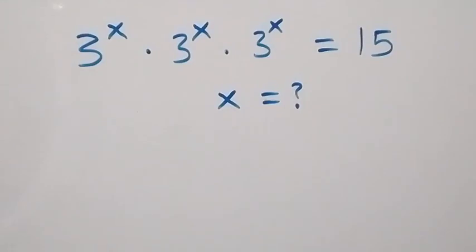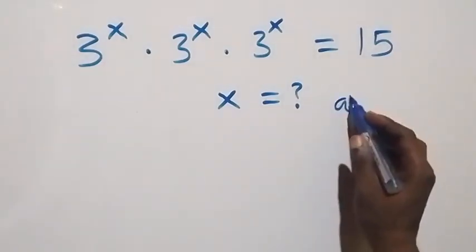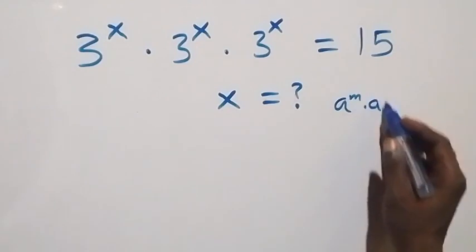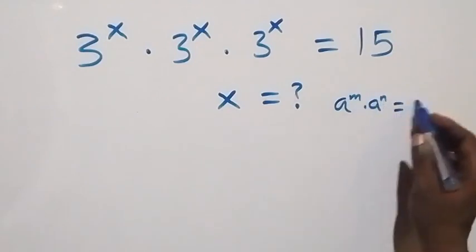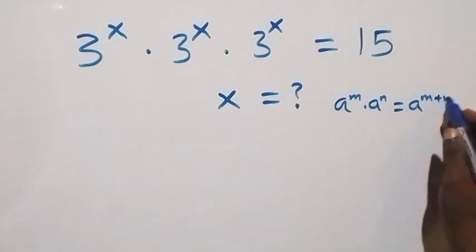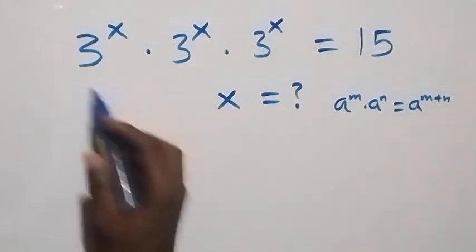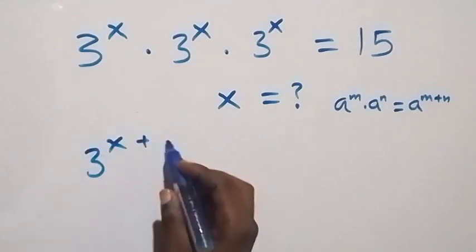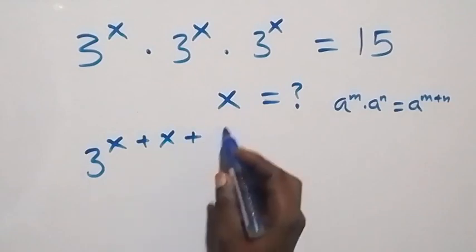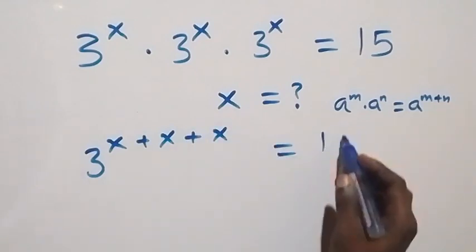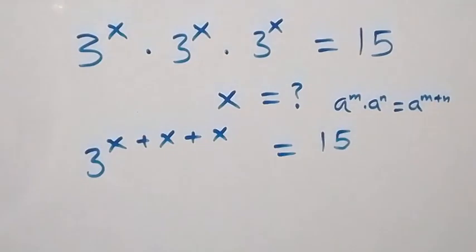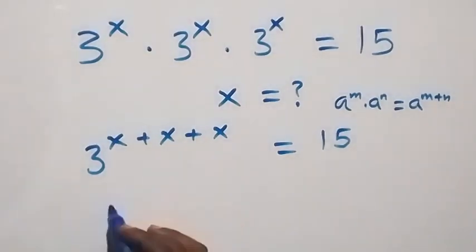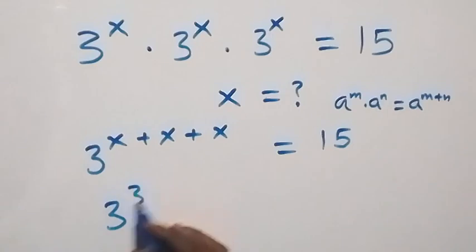Hello, you are welcome. How to solve for x in this nice exponential equation. This follows from the law of indices: a raised to power m times a raised to power n equals a raised to power m plus n. We can rewrite 3^x · 3^x · 3^x as 3 raised to power x plus x plus x, which equals 15, and that is the same as 3 raised to power 3x equals 15.